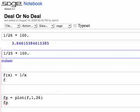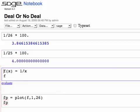Once you open up a suitcase, and assuming you don't open up the million dollars, you've now increased your odds to 1 out of 25, which is 4%. It's pretty clear that the function is 1 over x, where x is the number of suitcases remaining.